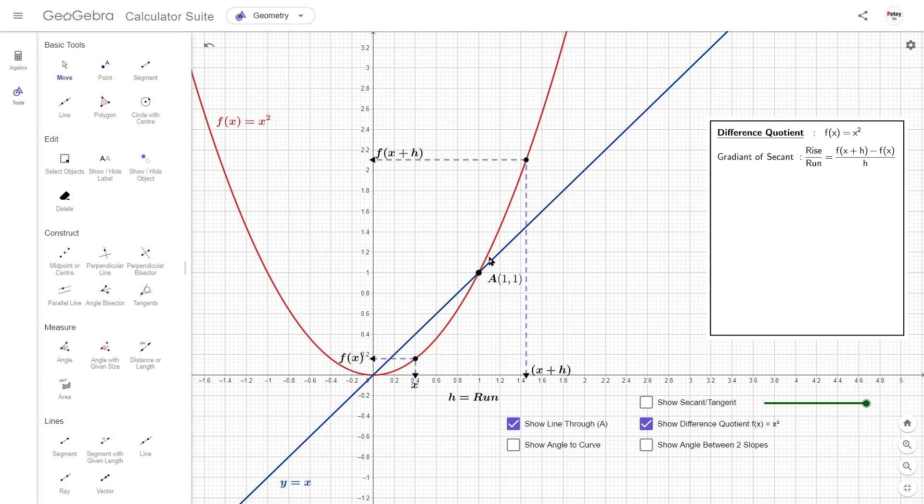But in order to find this angle, we'll first need to find the slope of the curve at point a. Currently, the secant has a slope of 1.85. But watch what happens when we drag these points closer to point a.